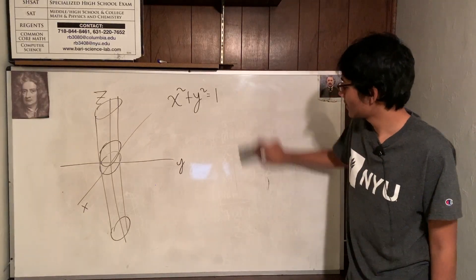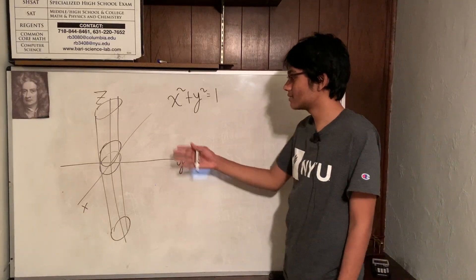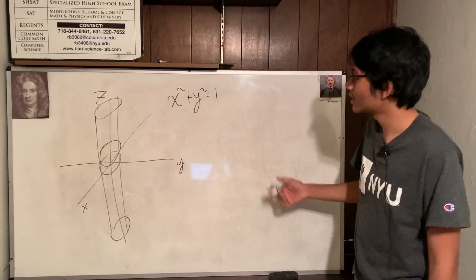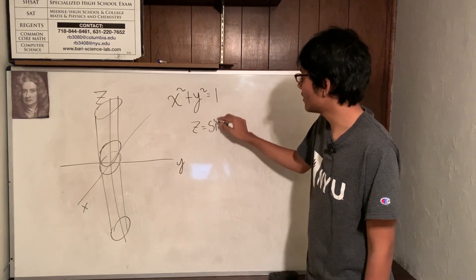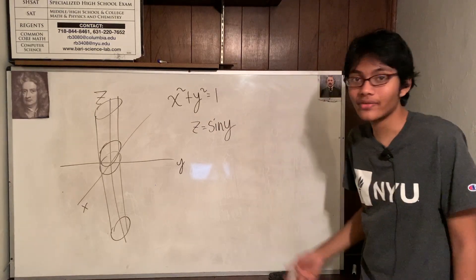Actually, this is a cylinder because it looks like one, but we also call something like this a cylinder. Z is equal to sine of Y. How would you graph that?